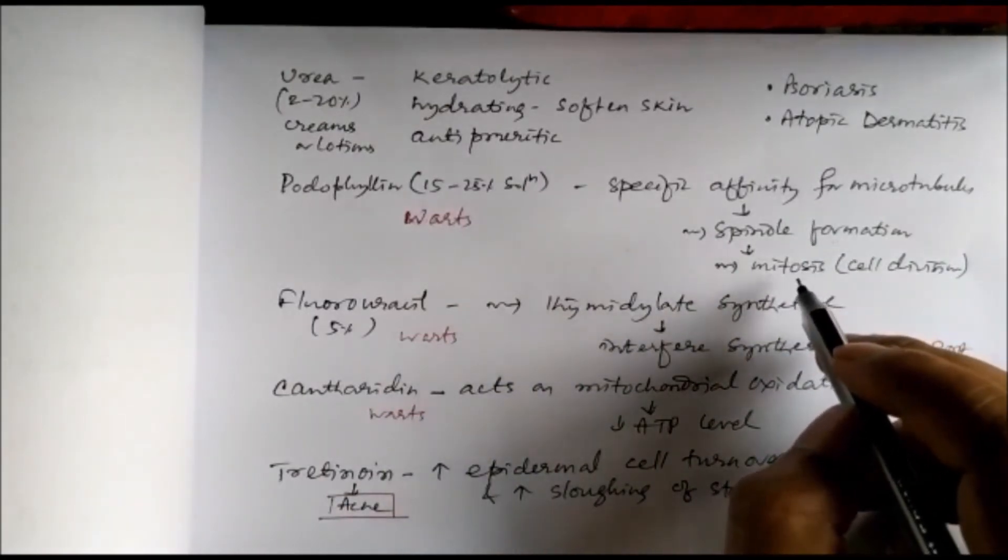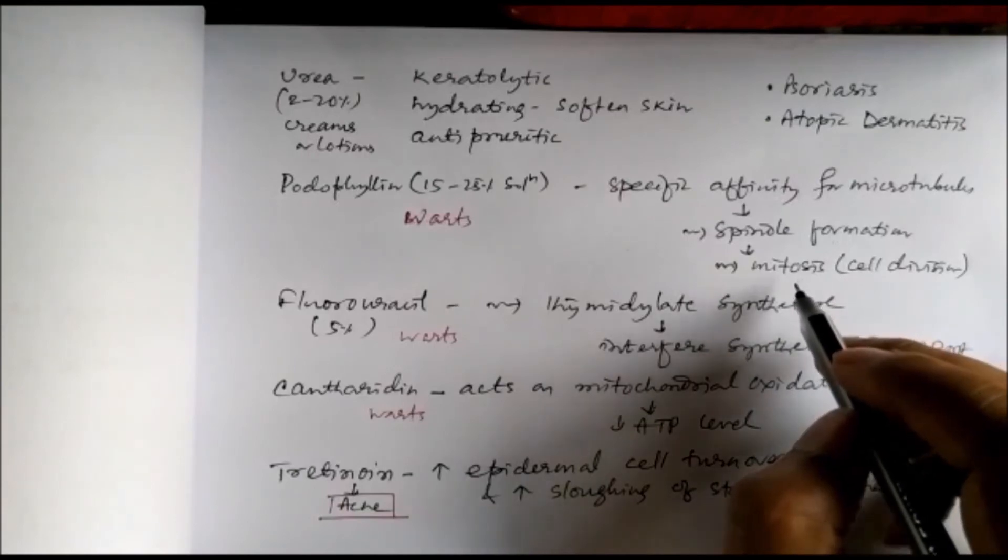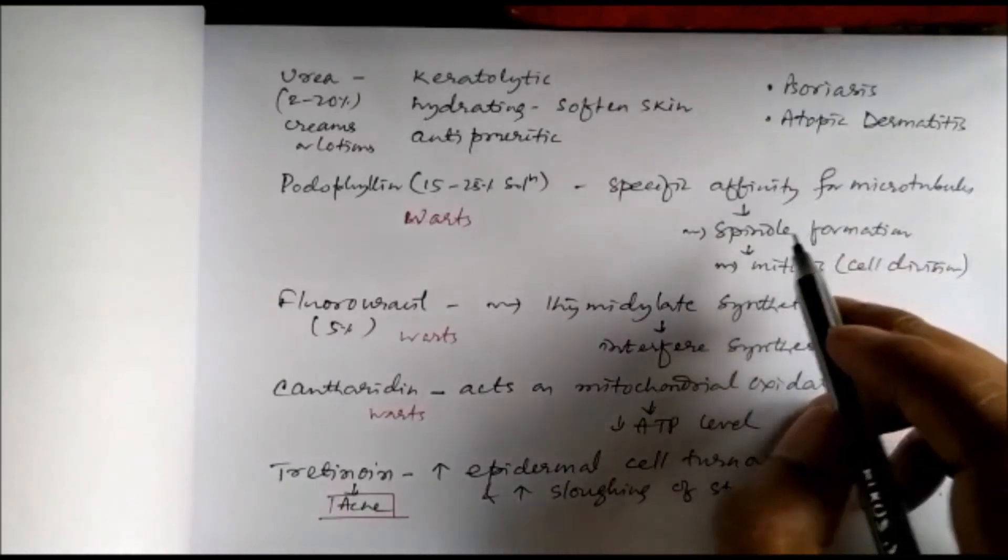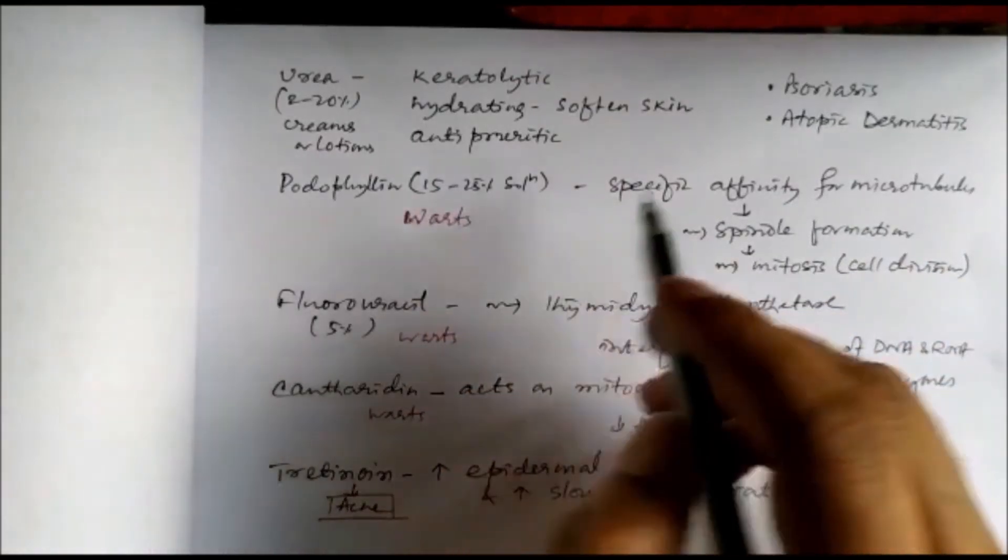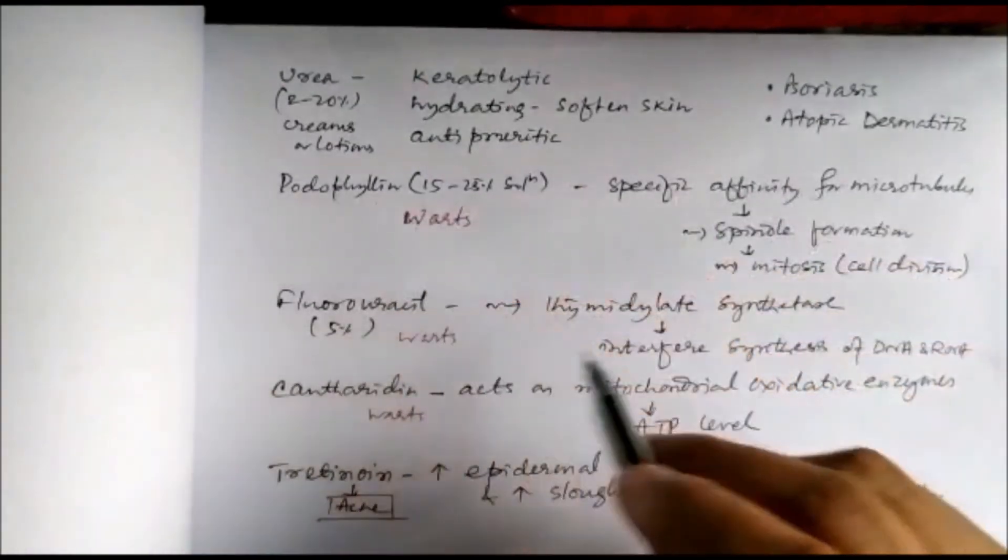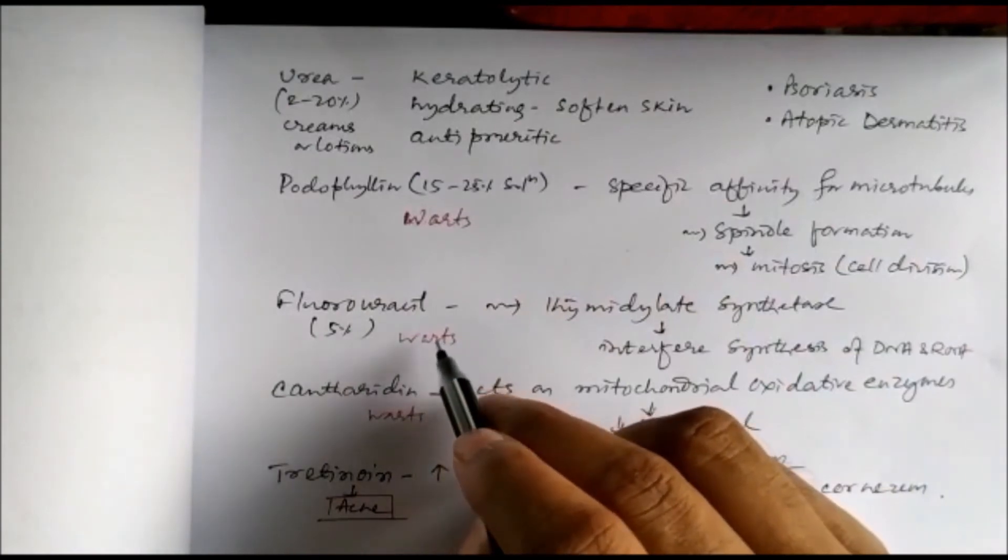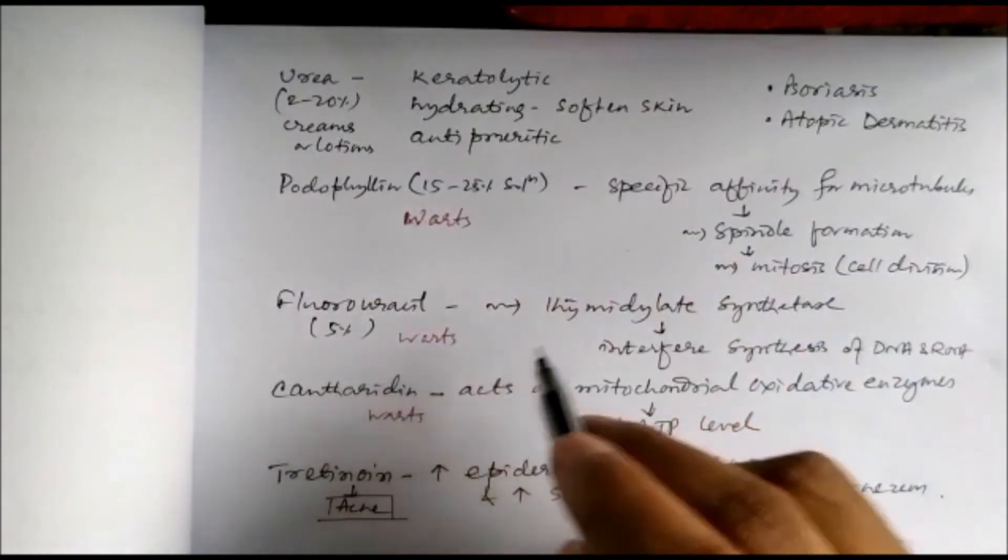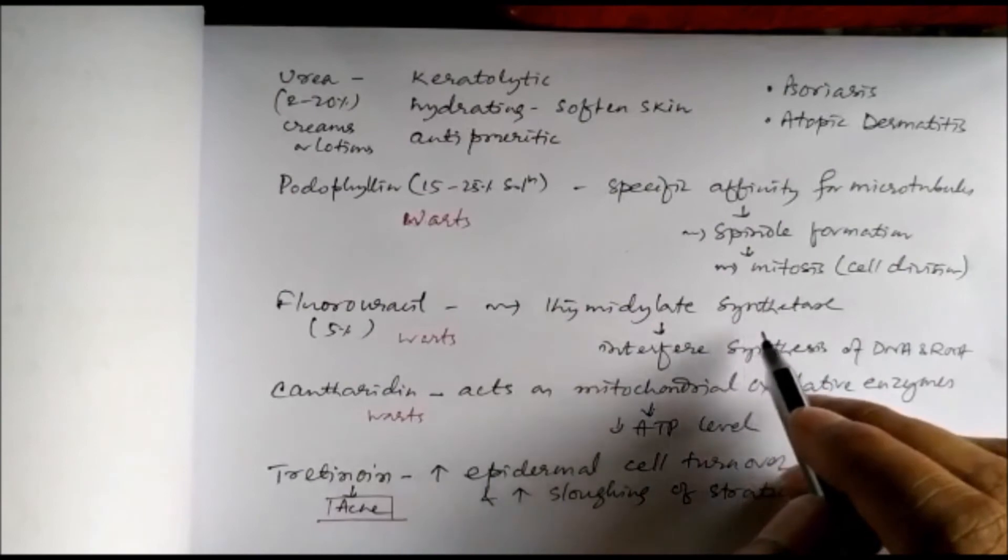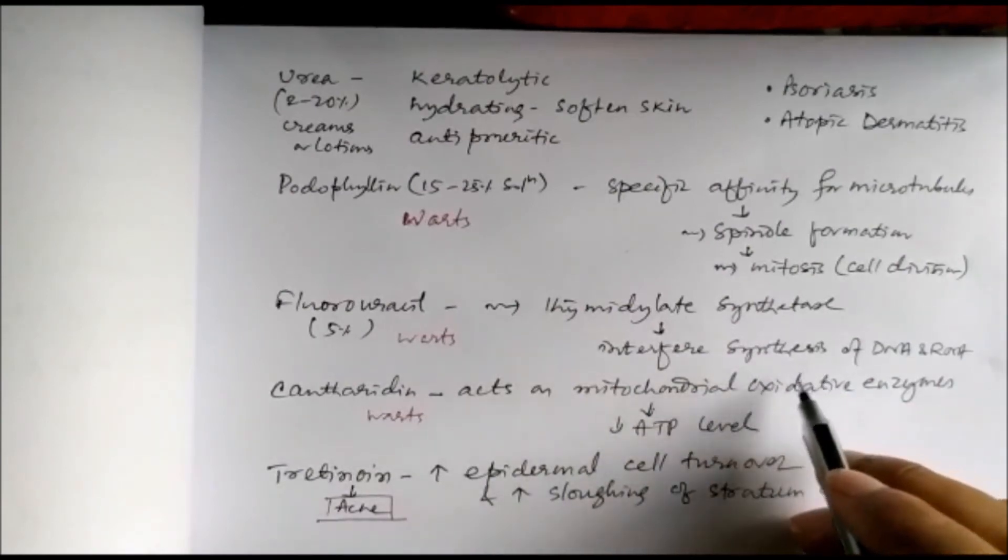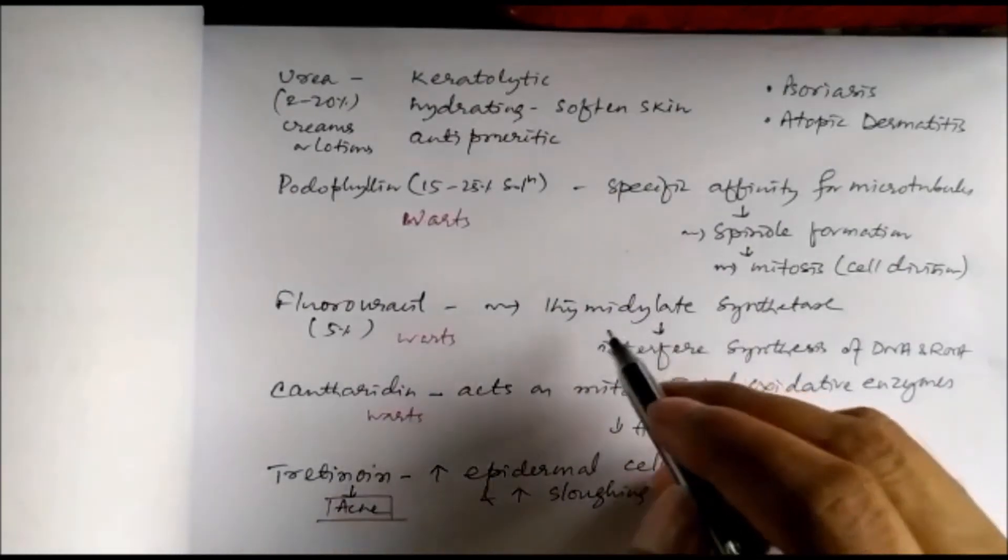Spindle formation is required in metaphase of mitosis, so cell division is inhibited by inhibiting the microtubules. Fluorouracil is an anti-metabolite with anti-cancer properties. It inhibits thymidylate synthetase and interferes with DNA synthesis.